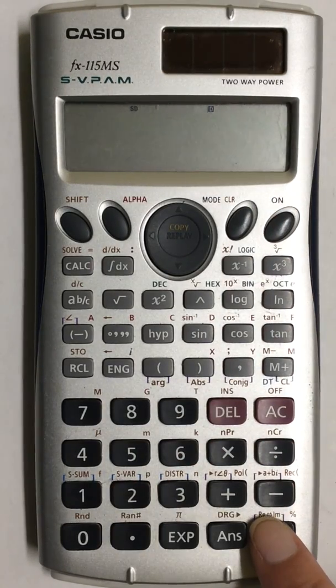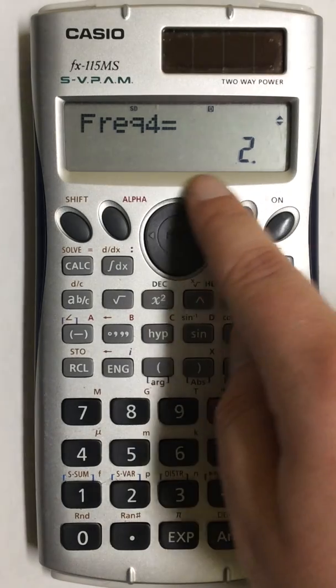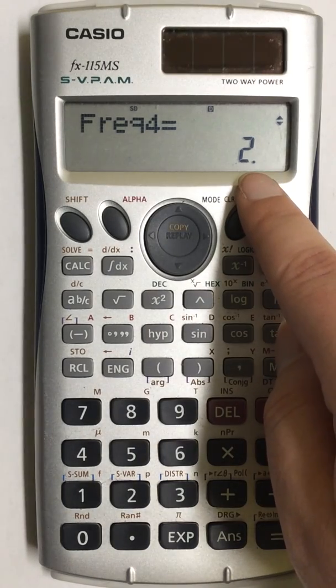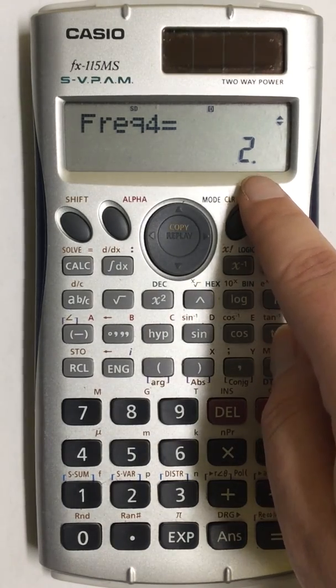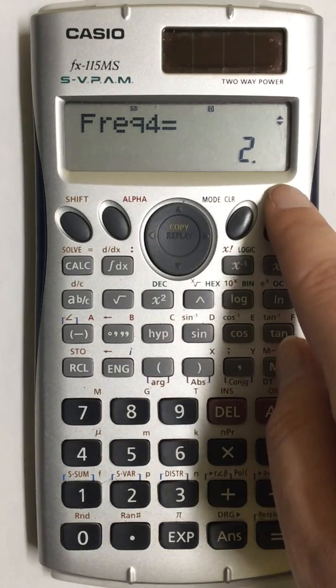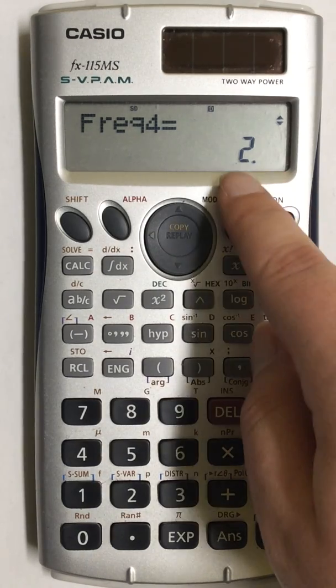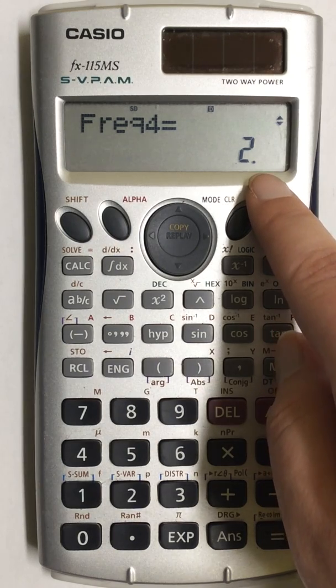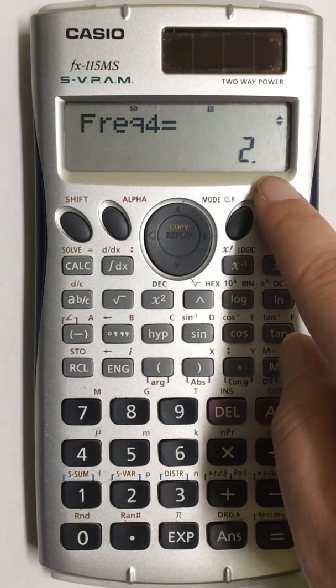Press 2 and then the equal sign. And that will change its frequency. So you can either press 18 twice and enter it in twice or you could go in and change the frequencies after you enter in the numbers.